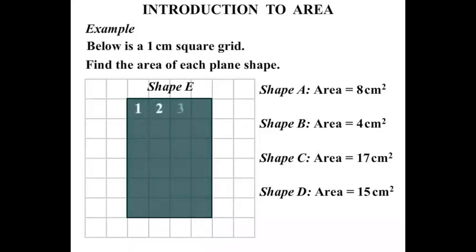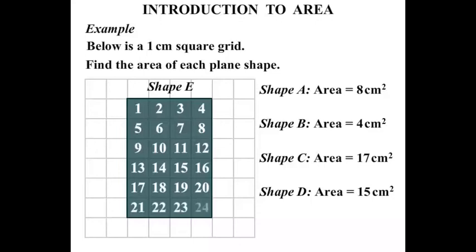One, two, three, four, five, six, seven, eight, nine, ten, eleven, twelve, thirteen, fourteen, fifteen, sixteen, seventeen, eighteen, nineteen, twenty, twenty-one, twenty-two, twenty-three, twenty-four. So shape E has an area of twenty-four square centimeters.